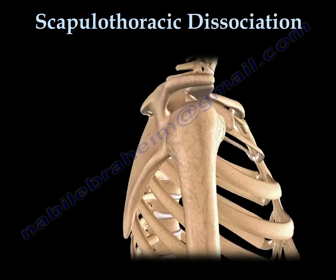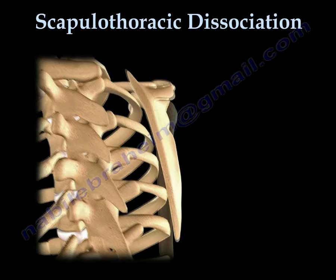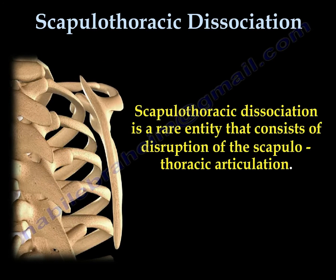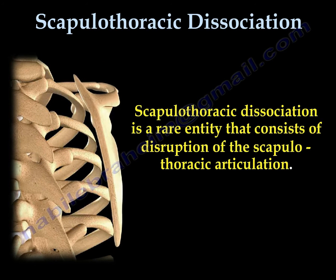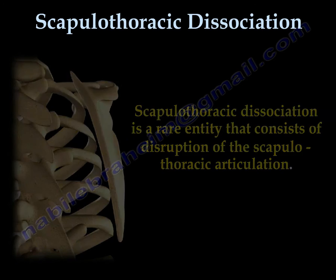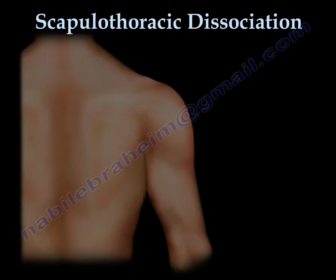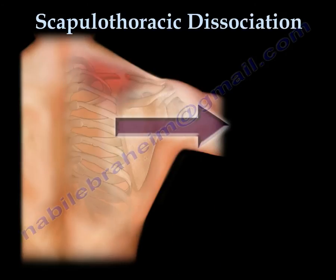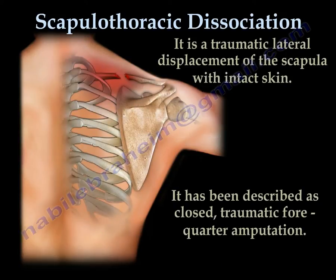The scapulothoracic dissociation is a rare entity that consists of disruption of the scapulothoracic articulation. It is a traumatic lateral displacement of the scapula with intact skin. We also say it is a closed traumatic forequarter amputation.